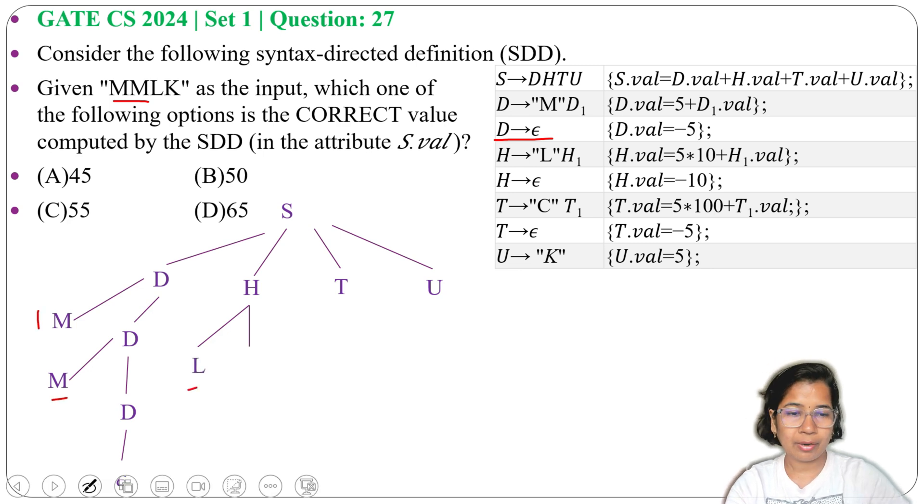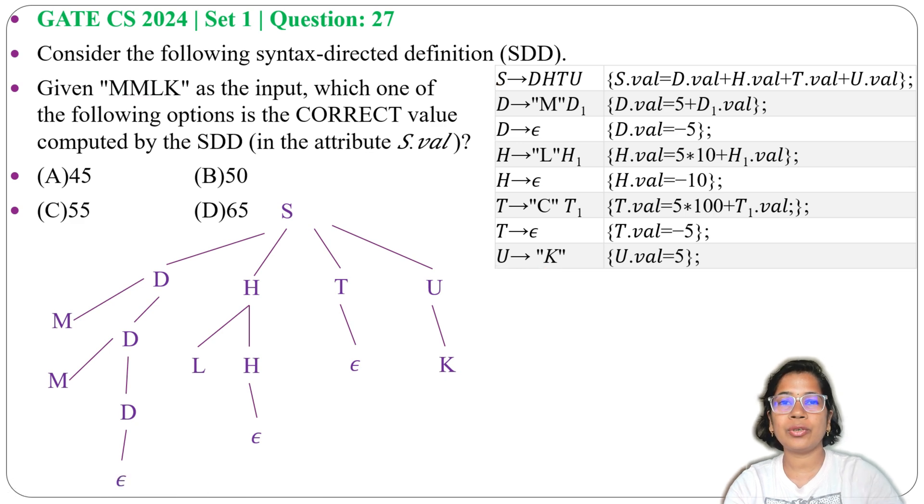Next, from H I will derive L and H. We got M, M, L. Now from H I will derive epsilon. Next, from T will derive epsilon as we already have M, M, L. And we need K. K can be derived from U. So from T will derive epsilon, then from U will derive K. Now I got M, M, L, K from this grammar.